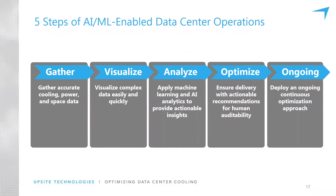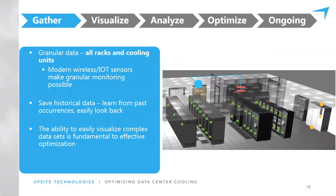When you consider gathering data, granular data makes this really powerful. Since we're using computers now we can gather a lot of data. That's been one of the criticisms of the rise of DCIM — it provides a lot of data but not a lot of action.